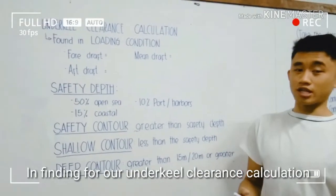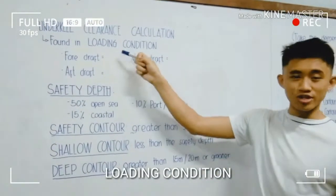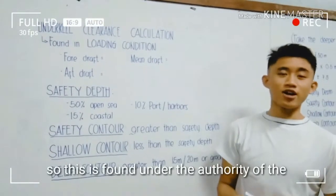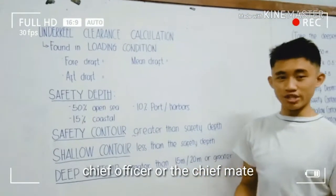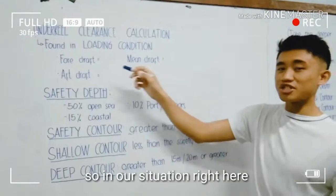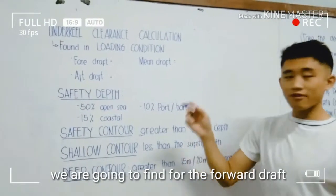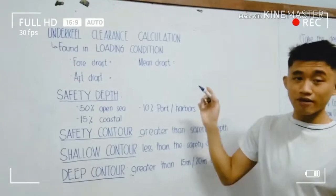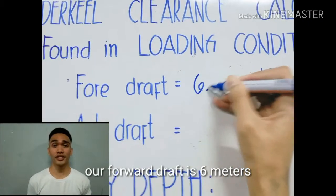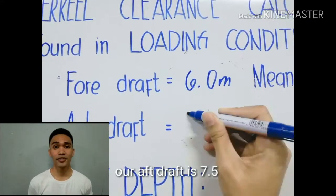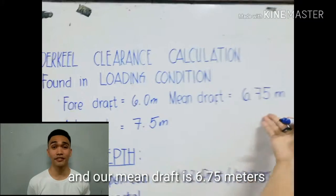In finding our Underkill Clearance calculation, we have to find this onboard in our loading condition. This is found under the authority of the chief officer or chief mate. In our situation, we are going to find the forward draft, aft draft, and the mean draft. In our general example, our forward draft is 6 meters, our aft draft is 7.5 meters, and our mean draft is 6.75 meters.